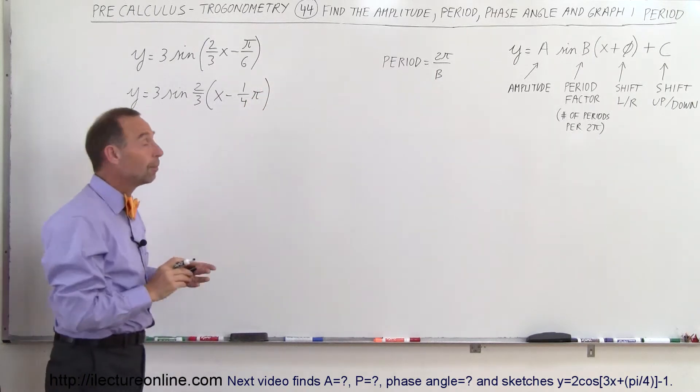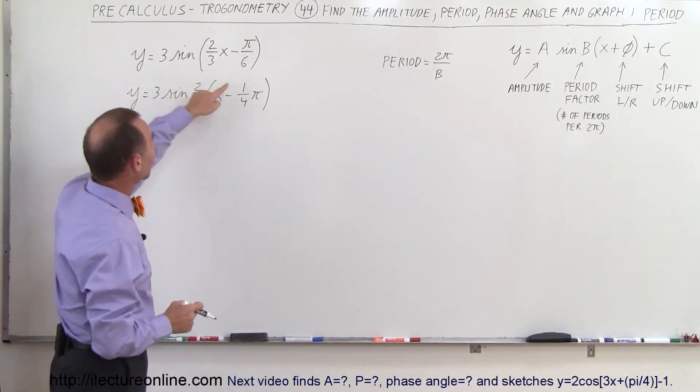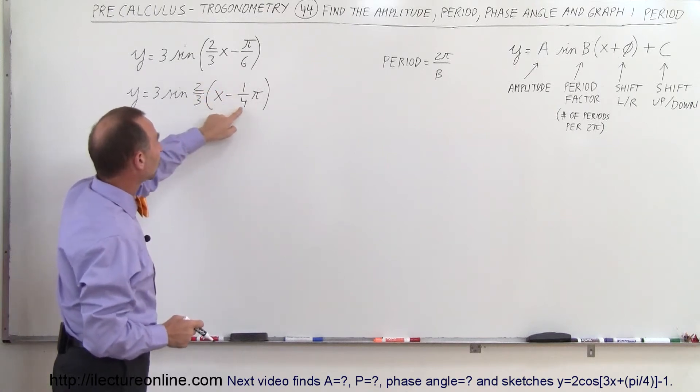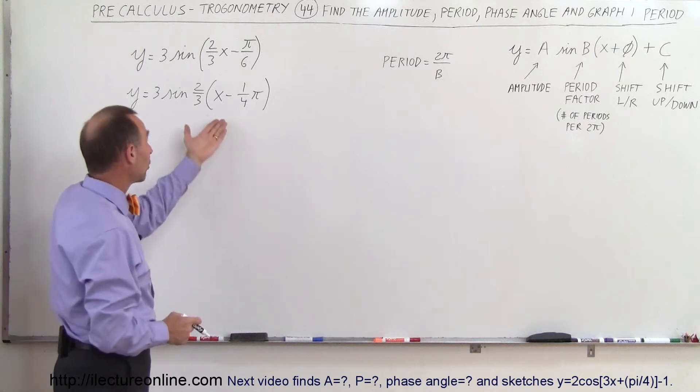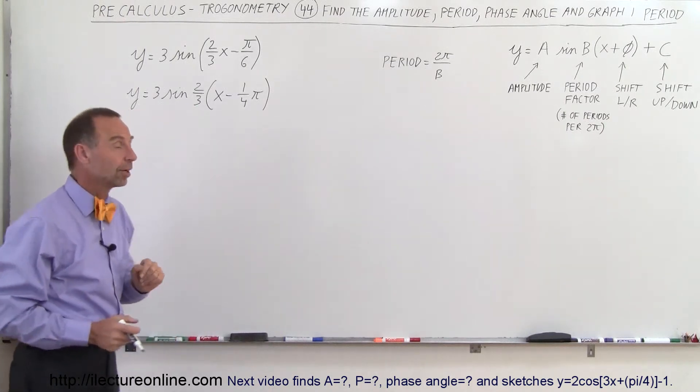And again, if you're not sure, multiply everything back in. So two times one is two, three times four is twelve, two-twelfths is the same as one-sixth, you get back what you started with. So you want to make it look at this format first, before we get started.